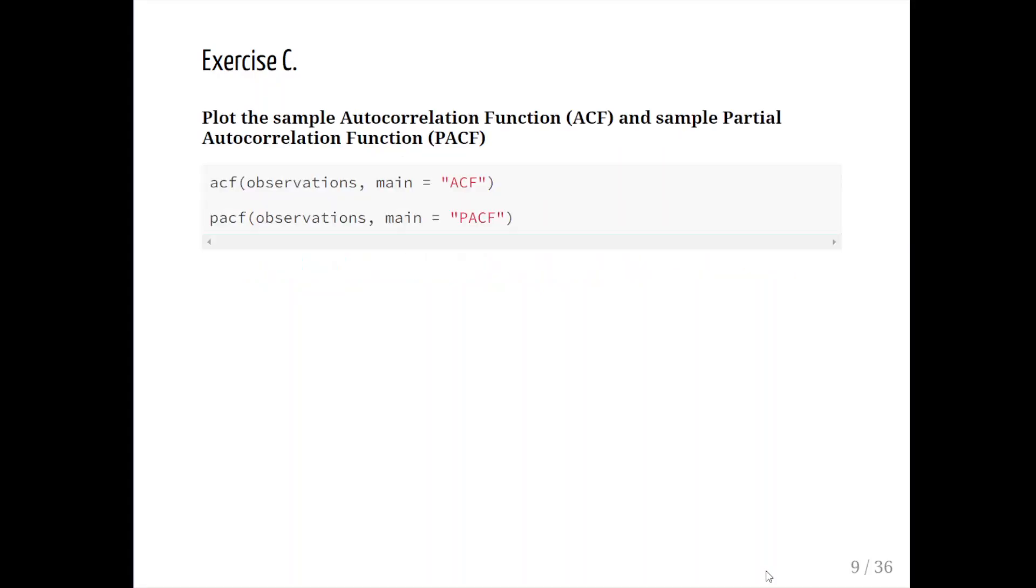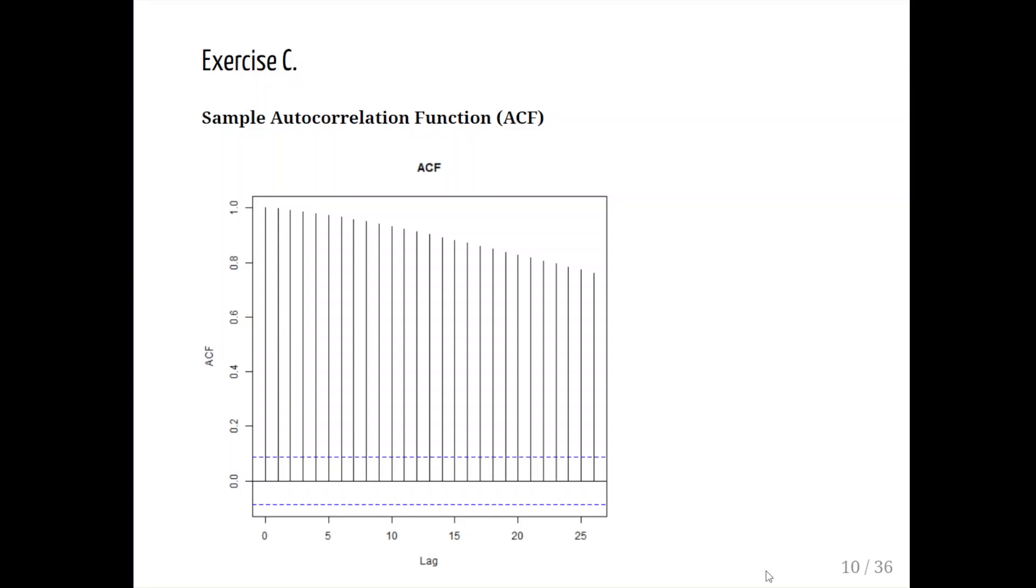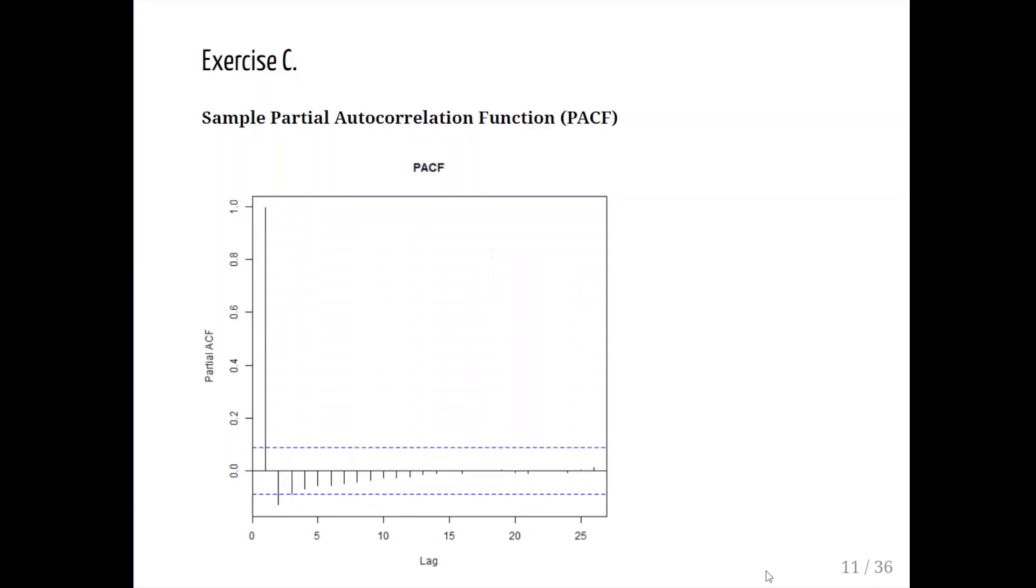Plot the sample autocorrelation function (ACF) and the sample partial autocorrelation function (PACF). This is straightforward - our dataset is called observations and we have the two commands there, ACF and PACF. Notice that we have blue bands down around the zero mark, but the lines are well above that, which is noteworthy. Here's the partial sample autocorrelation function. Again, notice the contrast between the bands and how the lines coming out of the x-axis behave with respect to those blue bands.